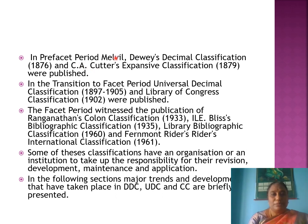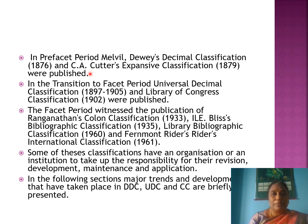In the pre-facet period, two classification schemes were published: Melvil Dewey's Decimal Classification, published in 1876, and C.A. Cutter's Expansive Classification, published in 1879. These two schemes — DDC and Cutter's Expansive Classification — are the key developments of the first period.